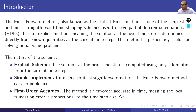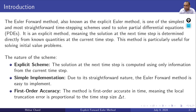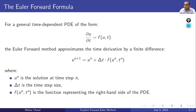The Euler forward method, also known as the explicit Euler method, is one of the simplest and most straightforward time-stepping schemes used to solve partial differential equations. It is an explicit method, meaning the solution at the next time step is determined directly from the known quantities at the current time step. This method is particularly useful for solving initial value problems. The solution at the next time step is computed using only information from the current time step. Due to its straightforward nature, the Euler forward method is easy to implement and is first-order accurate in time, meaning the local truncation error is proportional to the time-step size delta t.